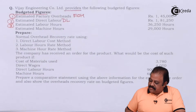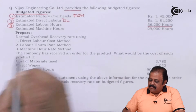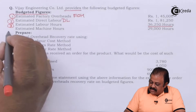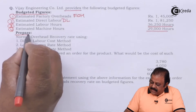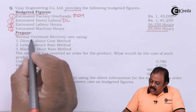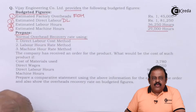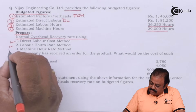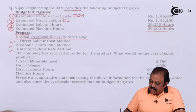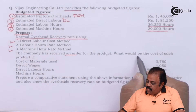Estimated labor hours 36,250 hours, estimated machine hours 29,000 hours. Prepare normal overhead recovery rate using direct labor cost method, labor hours rate method, and machine hour rate method.